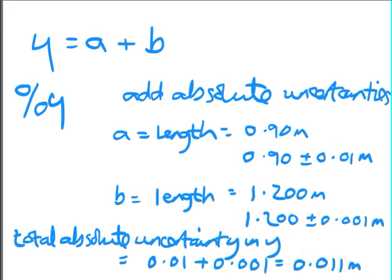And the way that you would express that is, taking these values here, we've got 0.9 plus 1.200, which is going to give us 2.1,